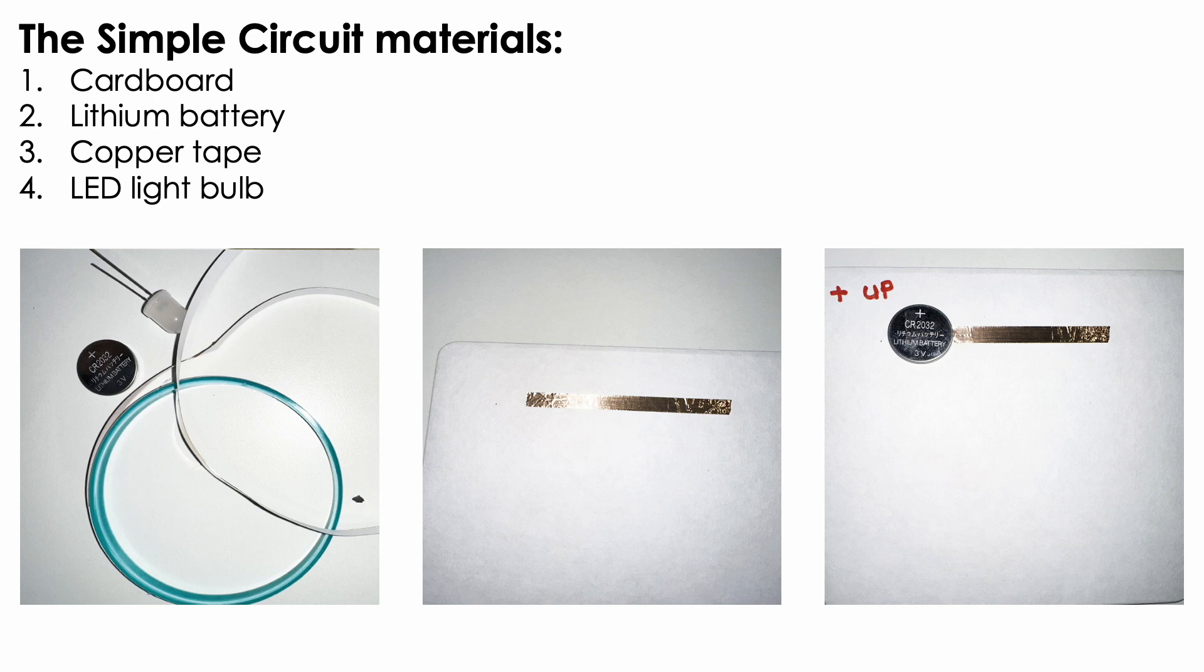So for step one every student should just put one piece of copper tape along their paper or their cardboard in this case to create just a single straight line. Place their battery again with the negative or the bumpy side facing down.